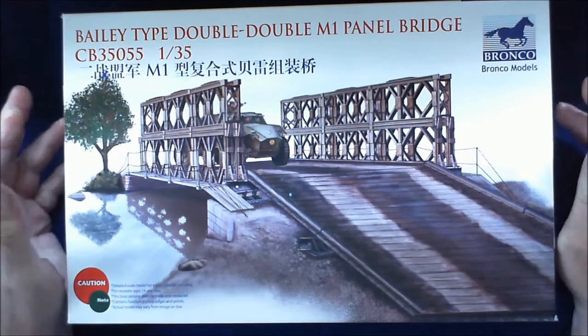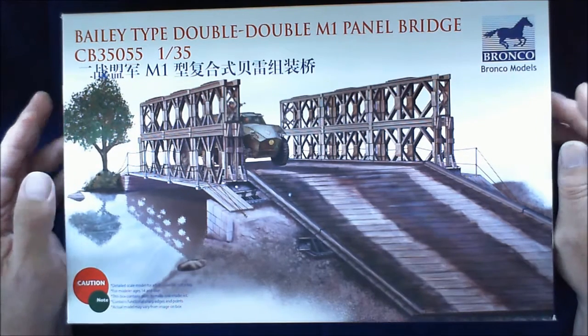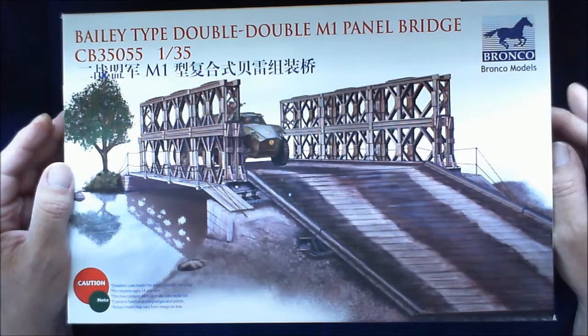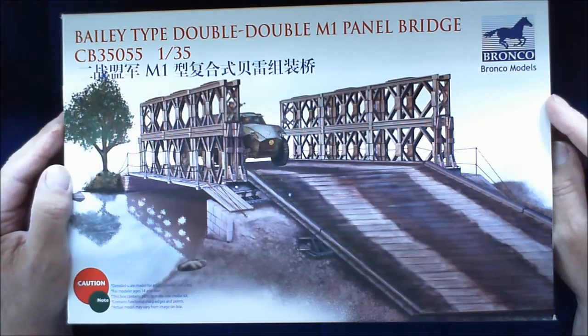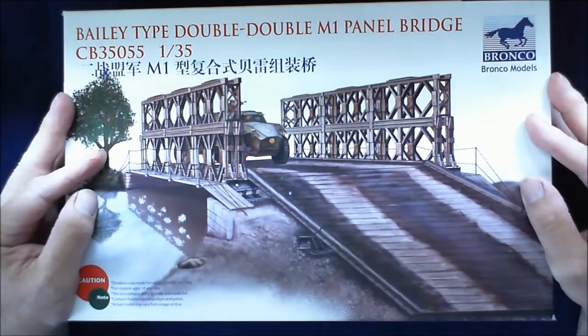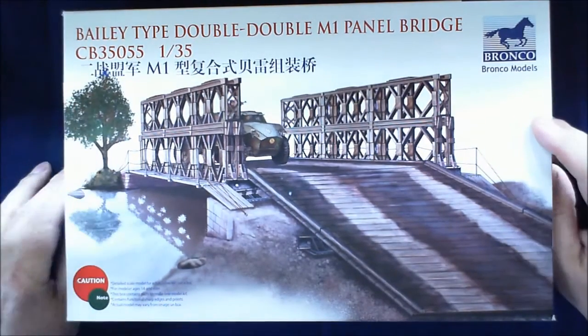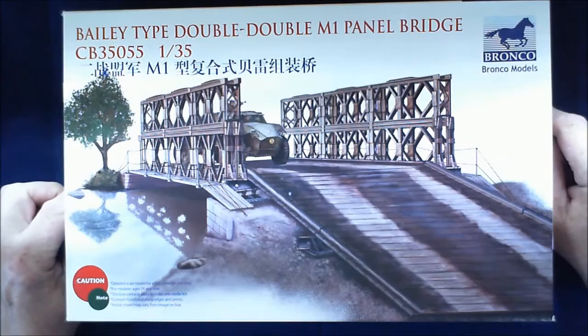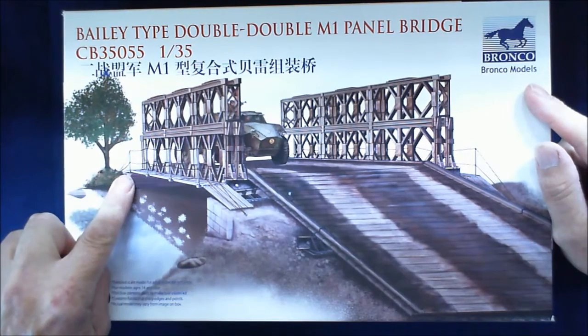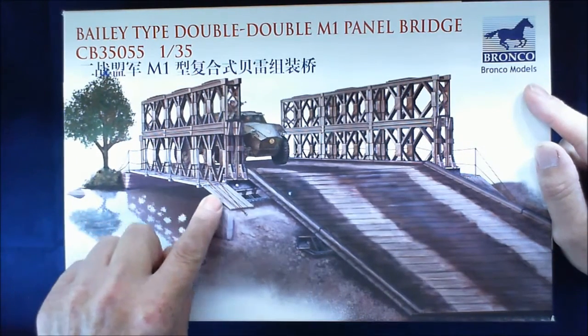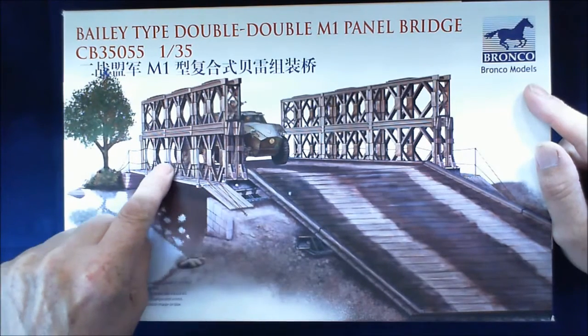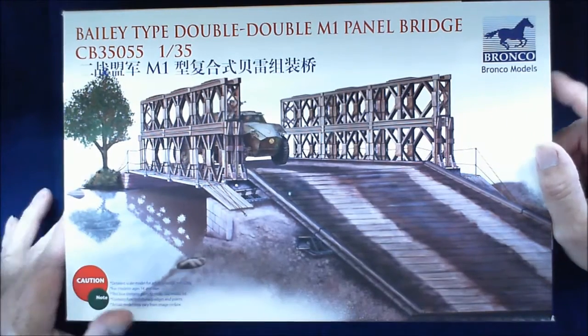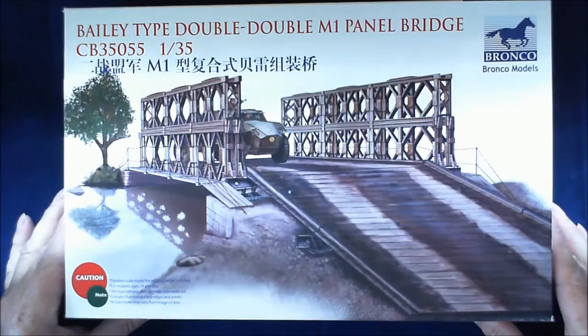And a few days ago I was on the internet and I saw it. And the master plan came in. I have a very devious plan for this which will be revealed a bit later on, but let's get on with this. This is the Bailey type double-double, I need double height there, M1 panel bridge. And also this one includes the pedestrian crossing for foot traffic, we'll call it, on both sides of it.